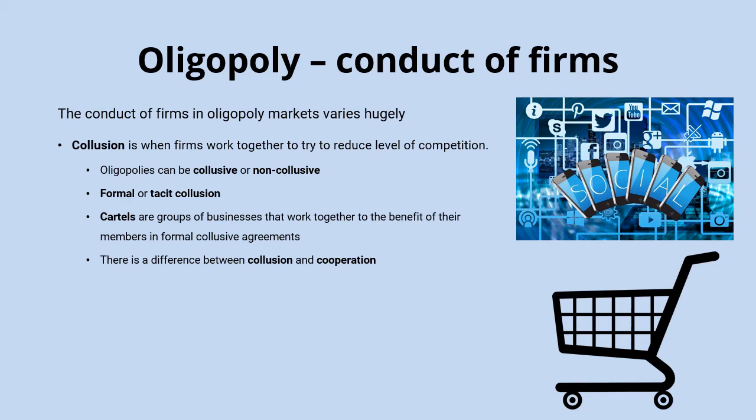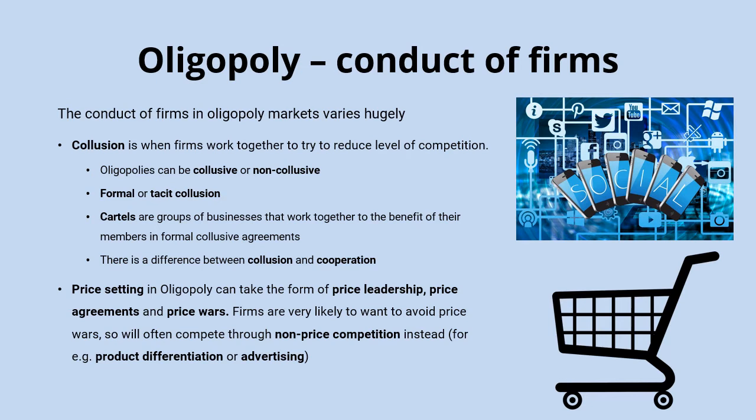Building on collusion, price-setting in oligopoly can take several forms: price leadership, where a dominant firm sets prices and others follow; price agreements, where firms formally agree on price and which is most likely to attract regulatory censure; and price wars, where firms undercut each other. Generally, firms in oligopoly want to avoid price wars, which is why they more commonly compete through non-price competition.